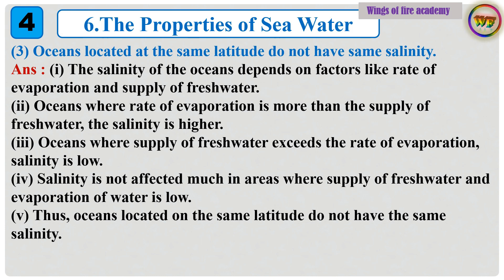Question 3: Oceans located at the same latitude do not have the same salinity. Answer: The salinity of the oceans depends on factors like rate of evaporation and supply of fresh water. Oceans where rate of evaporation is more than the supply of fresh water, the salinity is higher. Oceans where supply of fresh water exceeds the rate of evaporation, salinity is low. Salinity is not affected much in areas where supply of fresh water and evaporation of water is both low. Thus, oceans located on the same latitude do not have the same salinity.